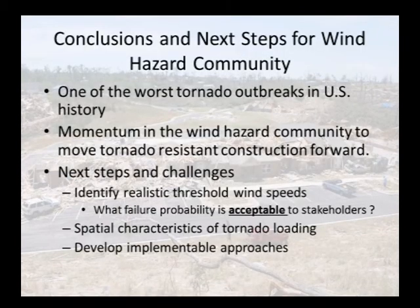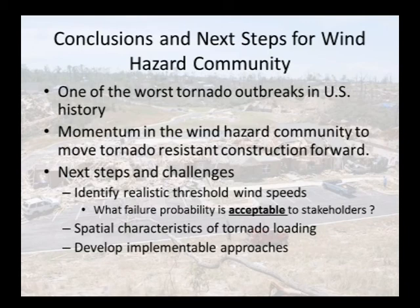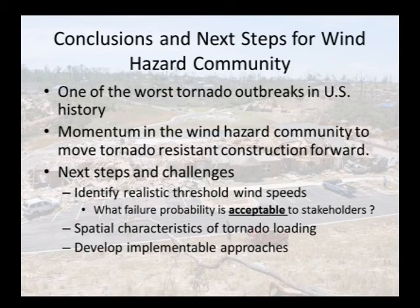One thing we've thought about is what is acceptable for the stakeholders. As you've heard today, this was one of the worst tornado outbreaks in U.S. history — top five, something like that. There's momentum in the wind hazard community to move tornado-resistant construction forward. I'm actually on the ASCE 7 committee — which determines the minimum building loads for buildings and other structures. I'm on a tsunami subcommittee and there's a chapter going in on tsunamis, and there's actually been talk of a chapter going in on tornadoes. How mandated this would be I don't know, but there was talk of that about two to three months ago — about a month after Joplin, so about six weeks after Tuscaloosa. That may happen, possibly by the 2015 edition.